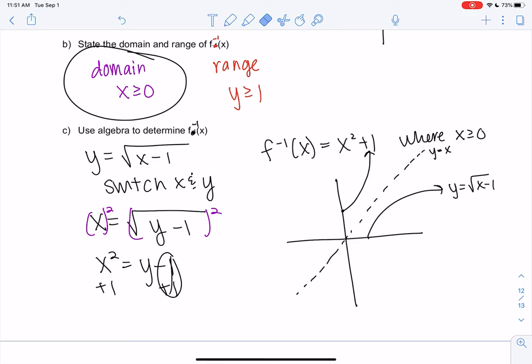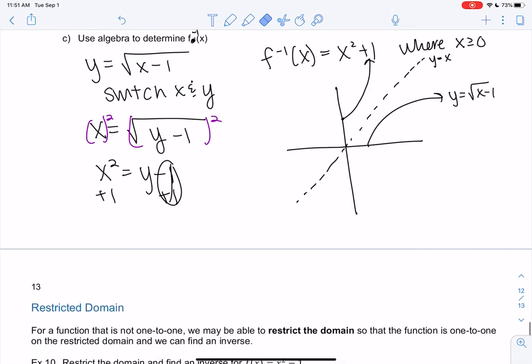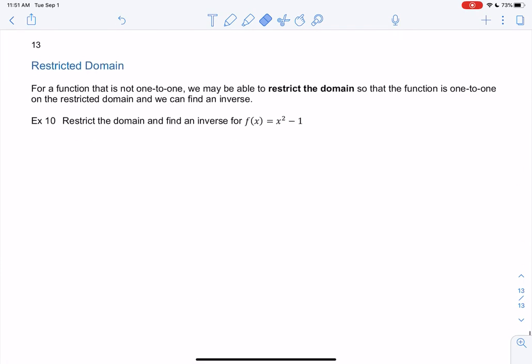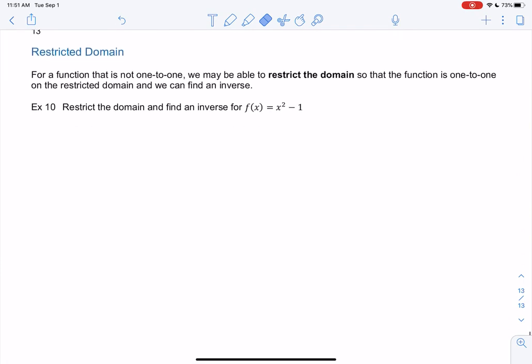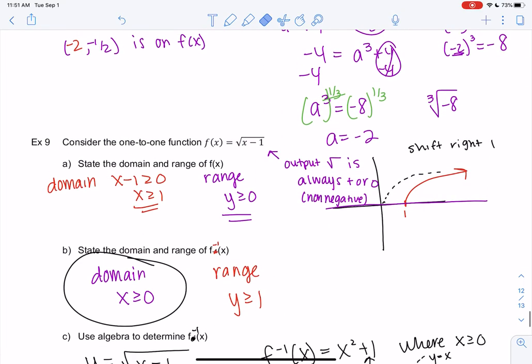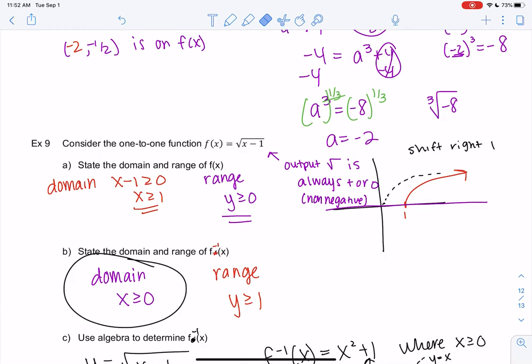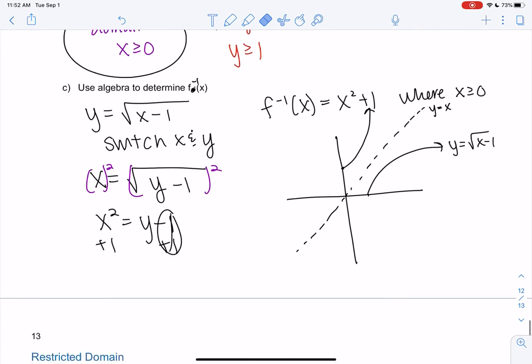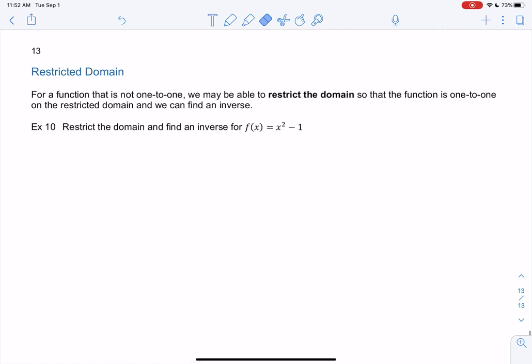And I just have one final example. And then hopefully we can get lots of practice out of the book to master this. So sometimes we'll restrict the domain as well from the get-go. So we didn't have to restrict the domain here, right? Because f of x equals square root x minus 1 was one to one. In this next example, this is not a one-to-one function. So sometimes when we have functions that are not one-to-one, we restrict the domain so that we can find an inverse.